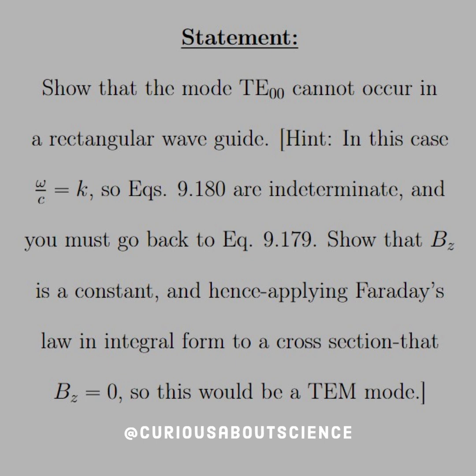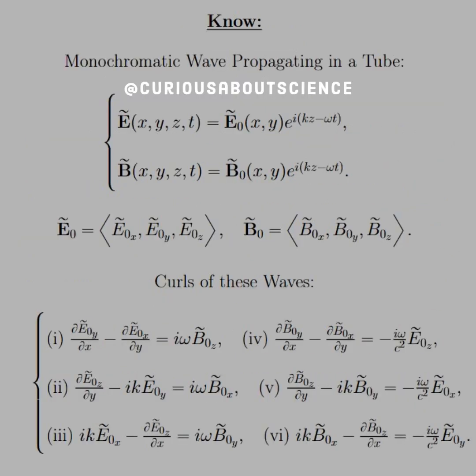All right, so our statement is: show that the mode TE00 cannot occur in a rectangular waveguide. The author gives us a hint. In this case, ω/c equals k, so equation 9.180 are indeterminate, and you must go back to 9.179. Show that Bz is a constant, and hence applying Faraday's law in the integral form to a cross-section, that Bz equals 0, so this would be a TEM mode. That's a whole lot of talking. Let's just get to what we know.